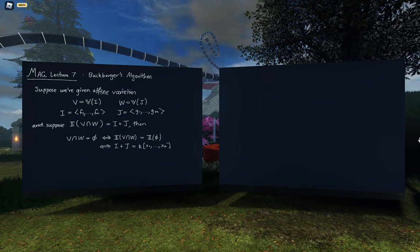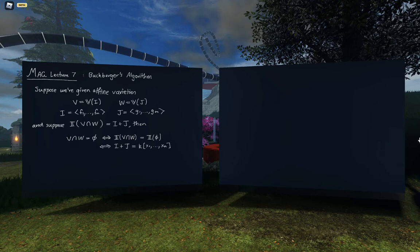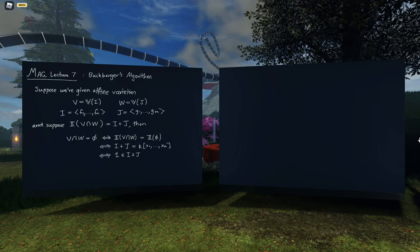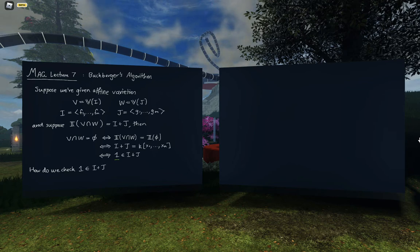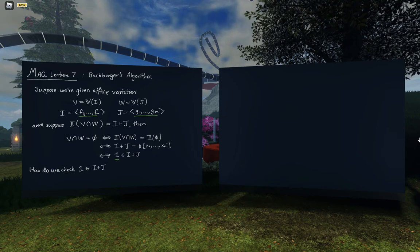Every polynomial vanishes on the empty set vacuously, so the whole ring is the ideal of the empty set. That's true if and only if one is in I plus J. As soon as you have one in an ideal, you contain everything. So that reduces to a check of whether the polynomial one belongs to our ideal. All we have to do is check whether one is in the ideal.